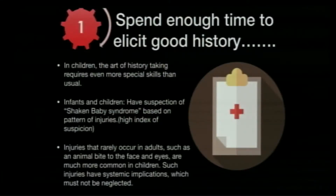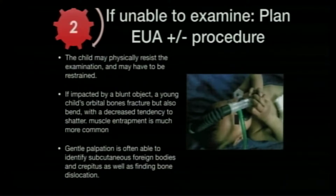First, spend enough time to elicit a good history, because it is very difficult to determine how injuries were sustained. Always keep a high index of suspicion for abuse and shaken baby syndrome. Injuries like animal bites to the face or eyes are very common in children and may have systemic implications. If examination is not possible, plan examination under anesthesia (EUA) with a procedure at the same sitting.